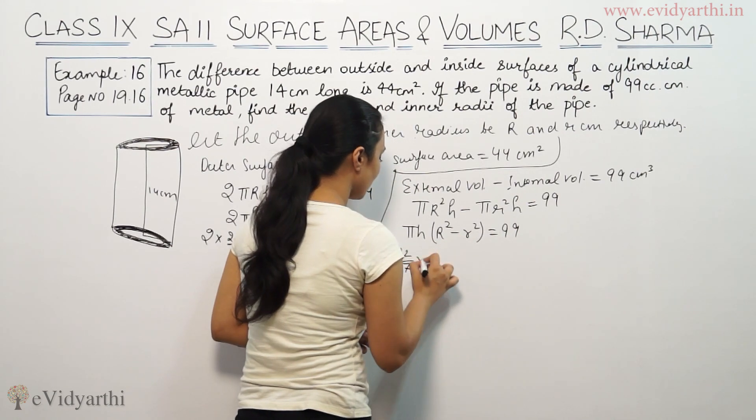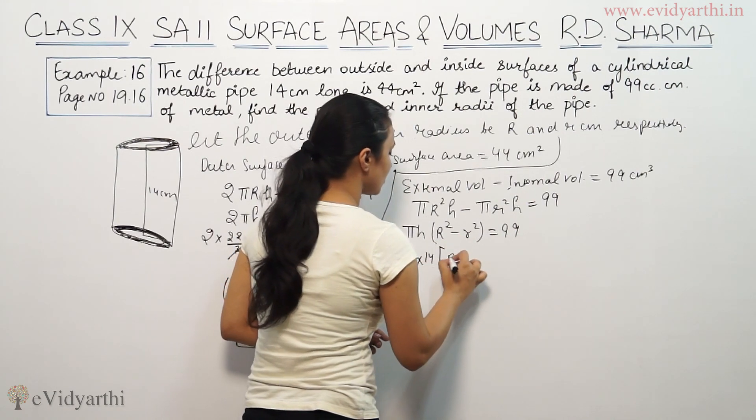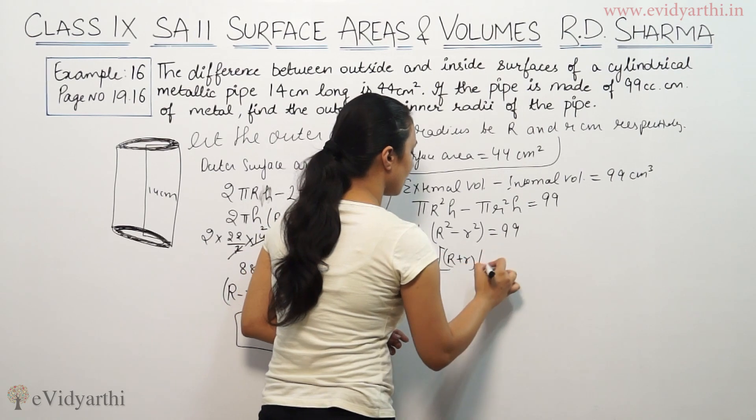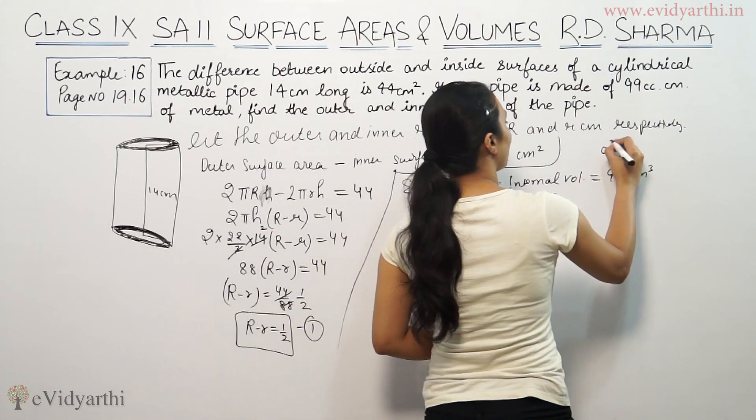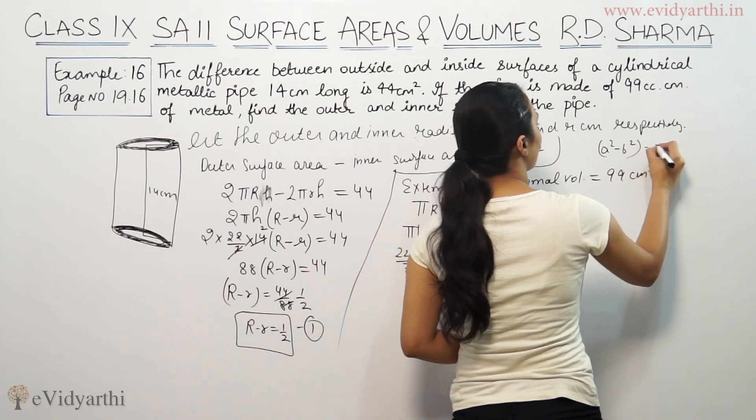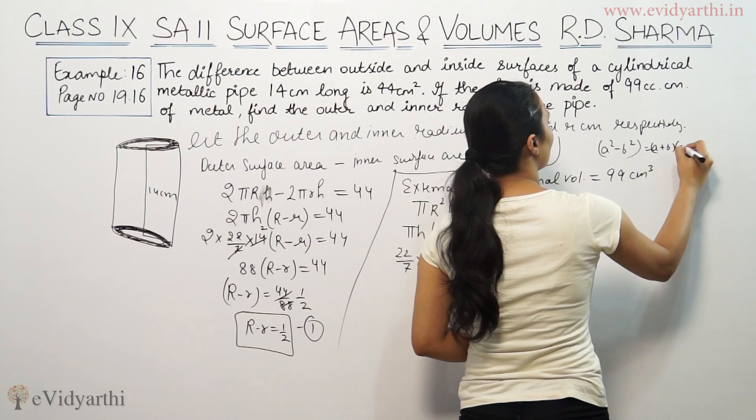Under that R² - r² = 99. So π is 22/7, times h. R² - r² - this is a² - b². The formula is (a + b)(a - b).